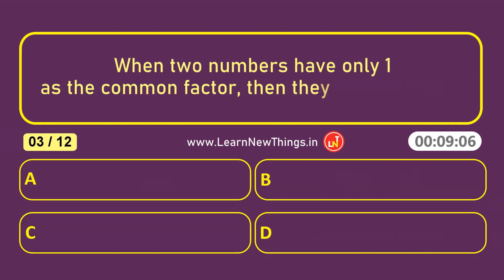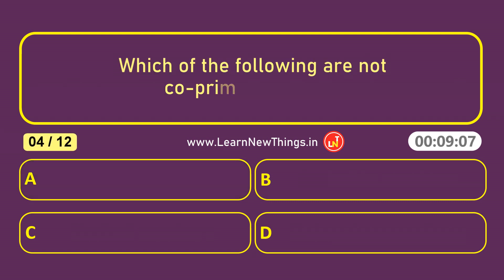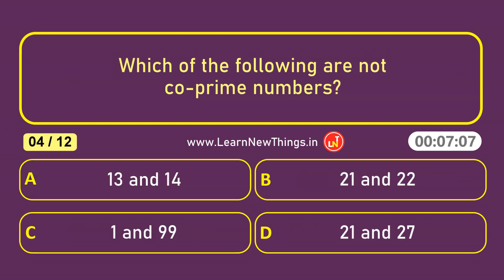When two numbers have only one as the common factor, then they are known as co-prime numbers. Which of the following are not co-prime numbers? 21 and 27.